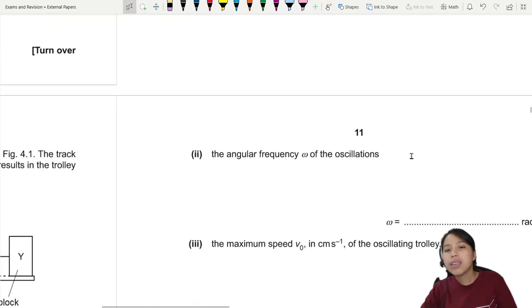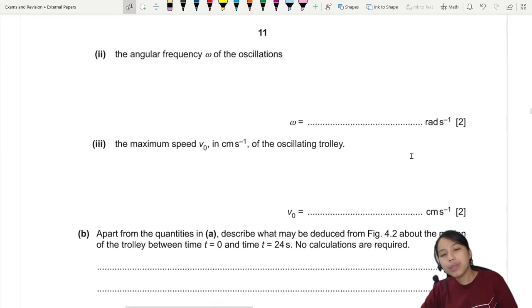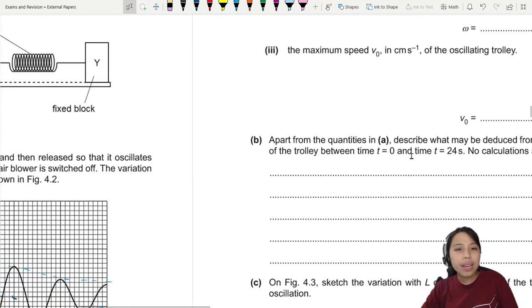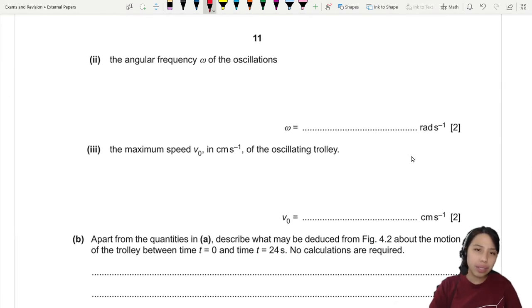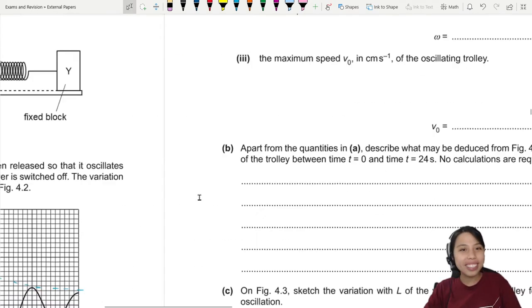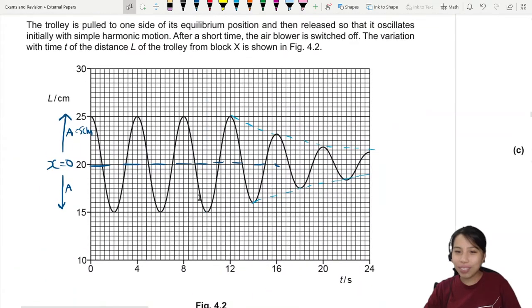Then we have the angular frequency of the oscillation that we need to find. Angular frequency - what is angular frequency? Let's write down what the equation is first. So omega is 2π over T. We need to find T. Let's go to the graph and find T.